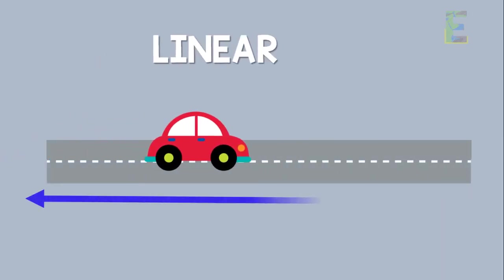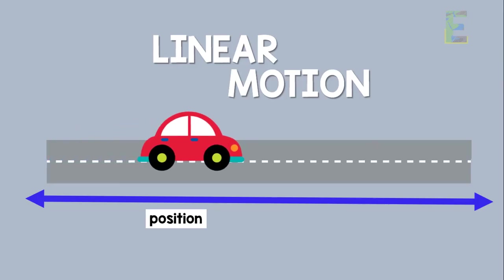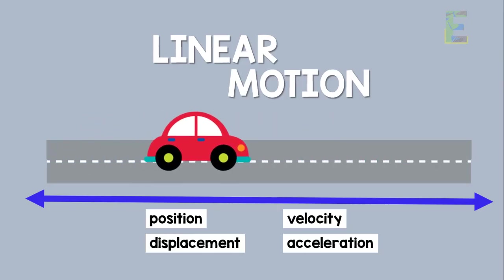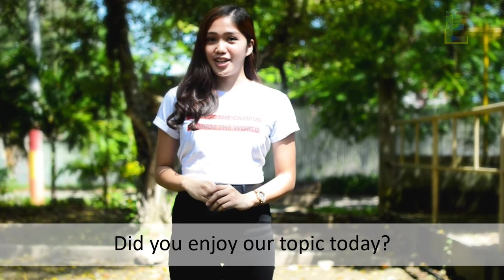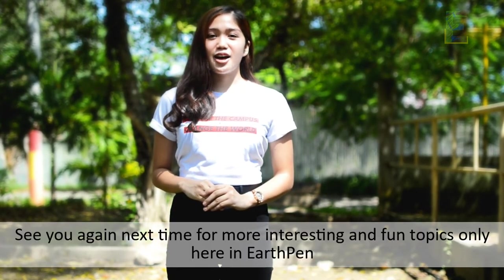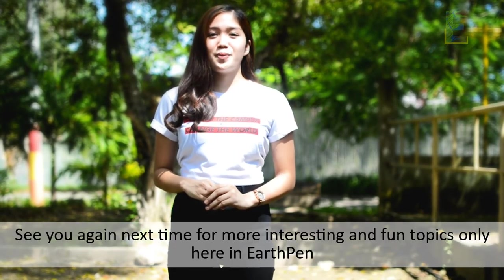Before we end, let us first summarize everything. Today, you learned about motion in a straight line. You also learned about an object's position, its displacement, velocity, and acceleration when in linear motion. Did you enjoy our topic today? I hope you certainly did. See you again next time for more interesting and fun topics only here in EarthPen.